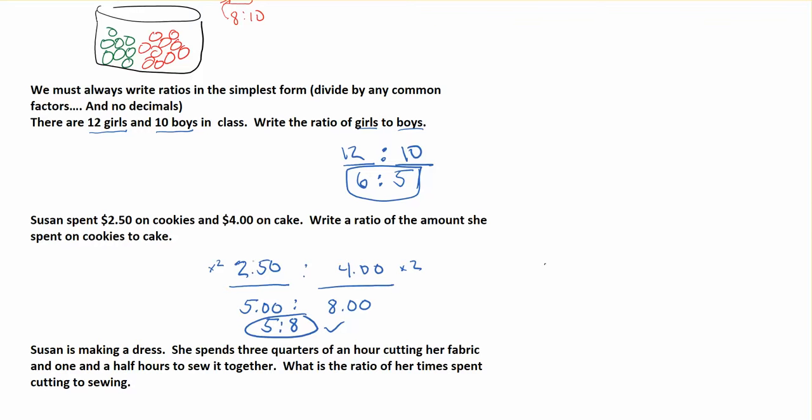If there's a decimal, you need to think about what you can times it by to turn it into a whole number. Whatever you've done to one side, similar to algebra, you need to do to the other side as well.